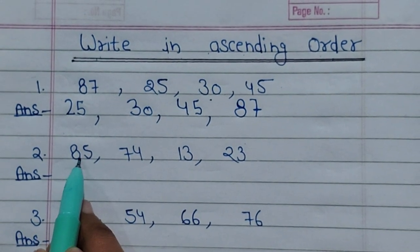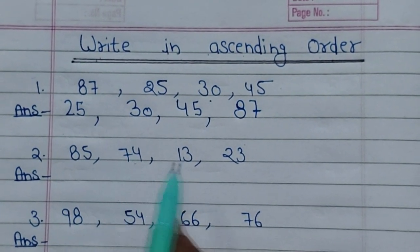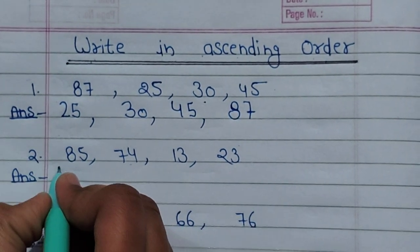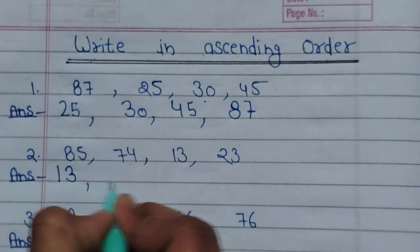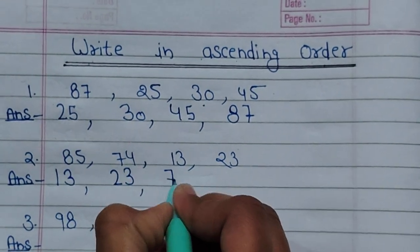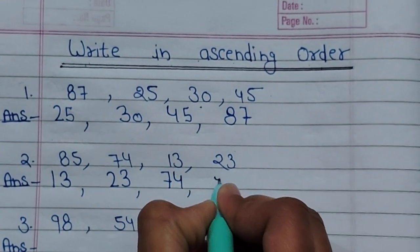85, 74, 13, 23. In ascending order: 13, 23, 74, 85.